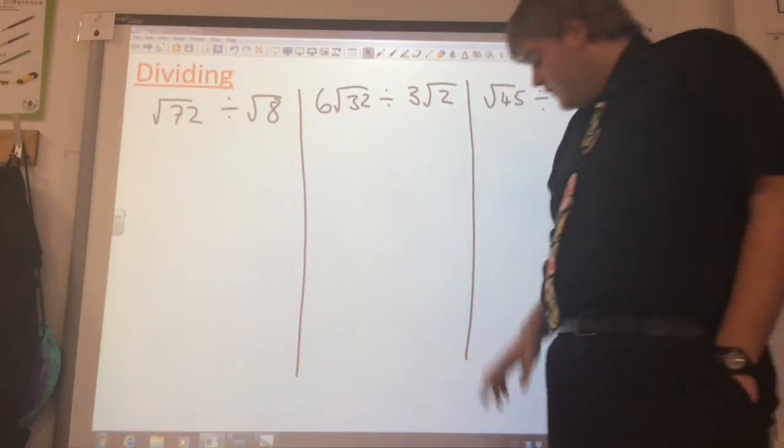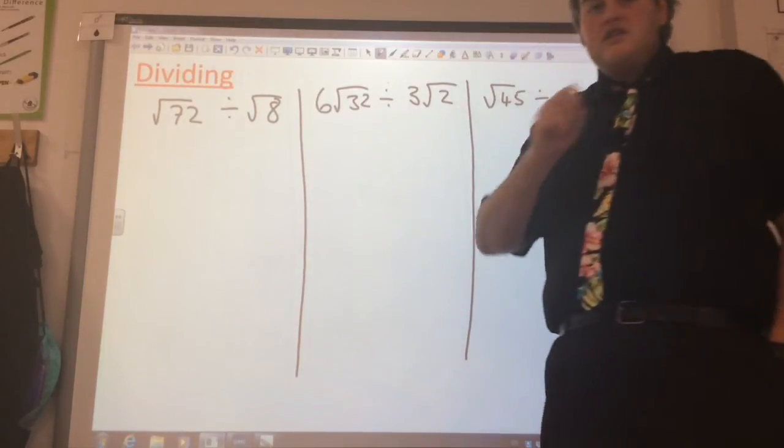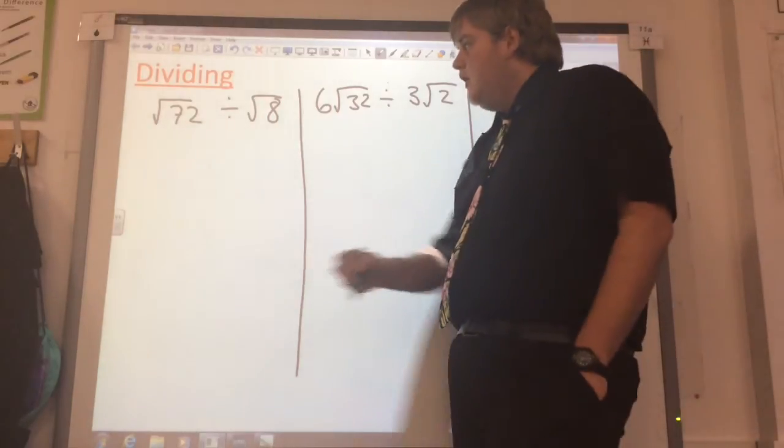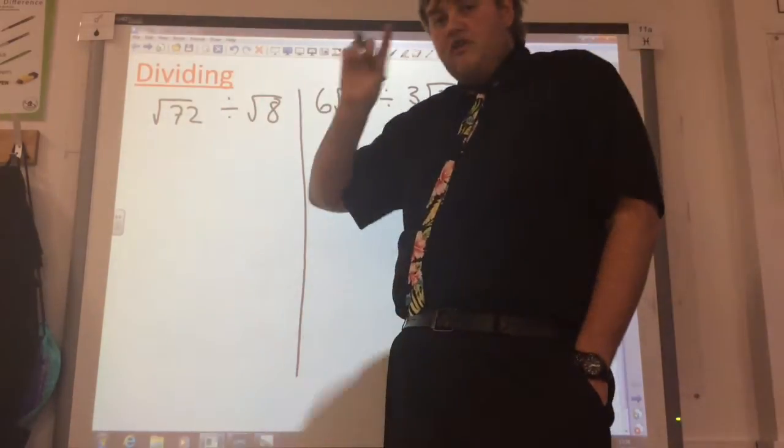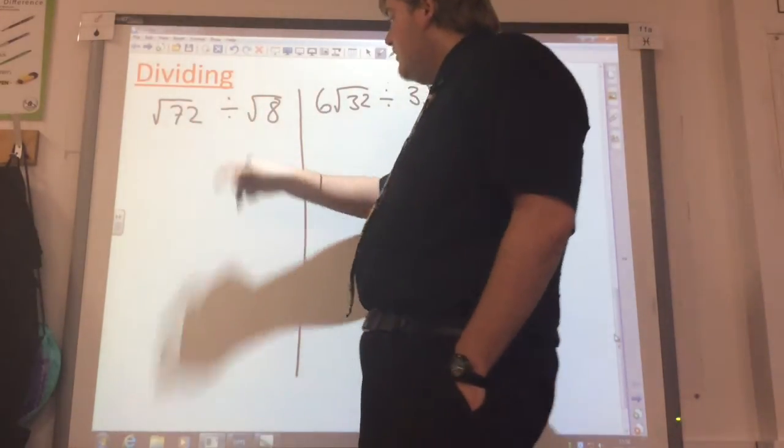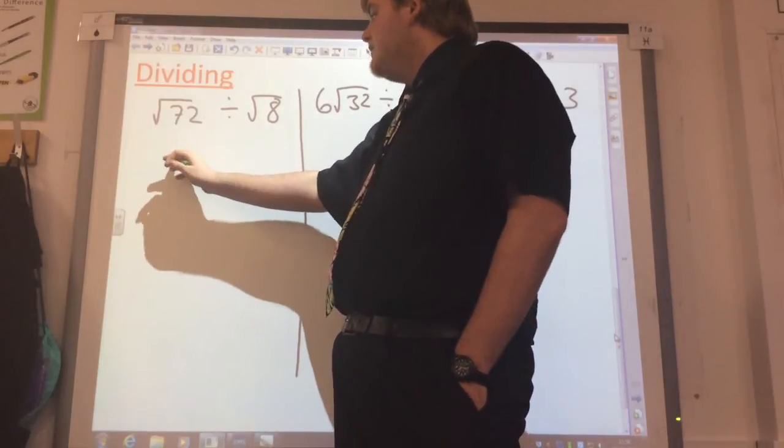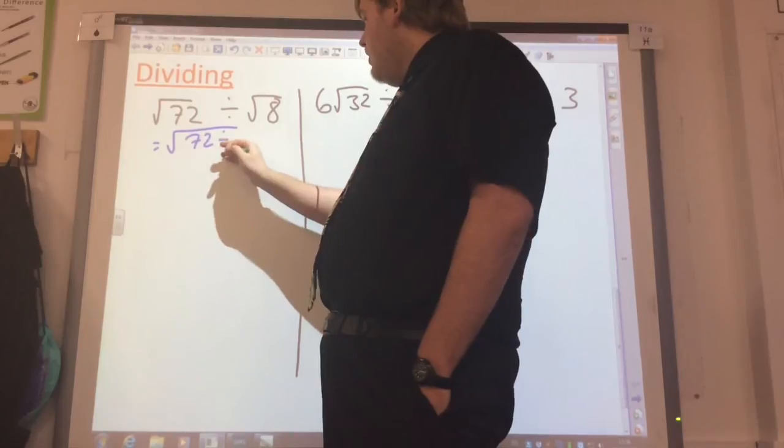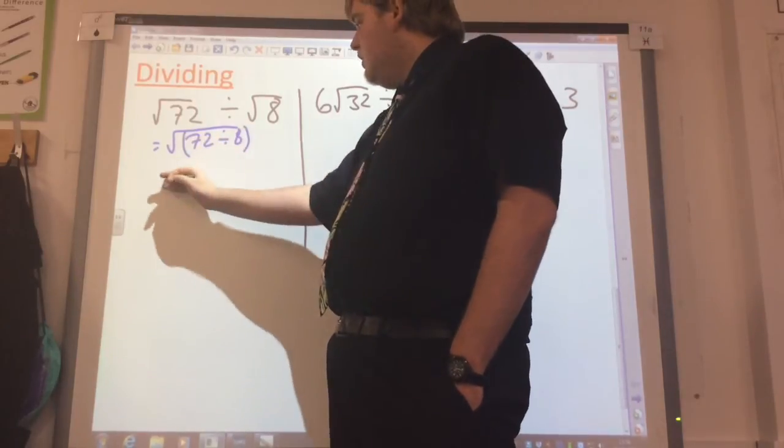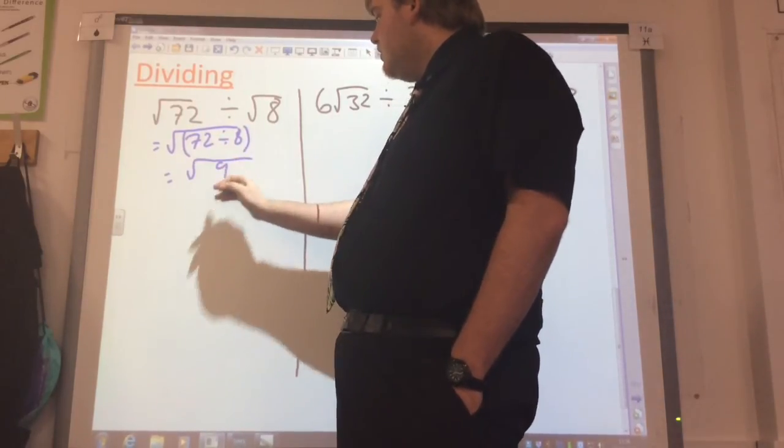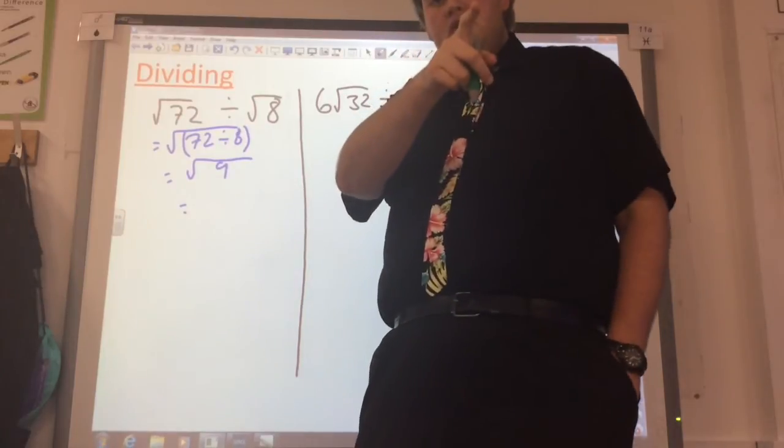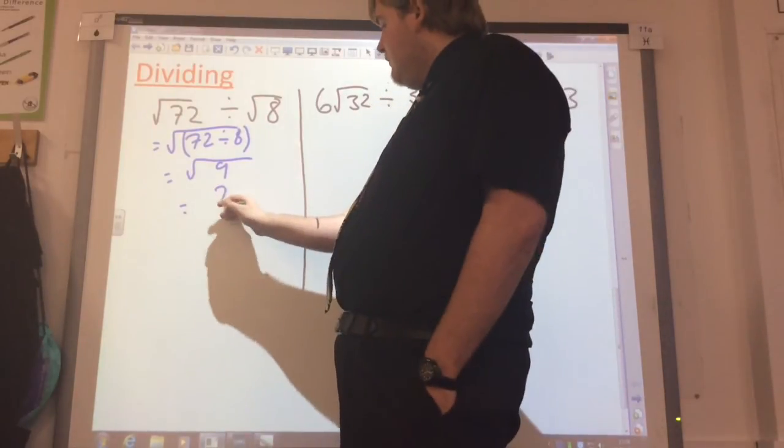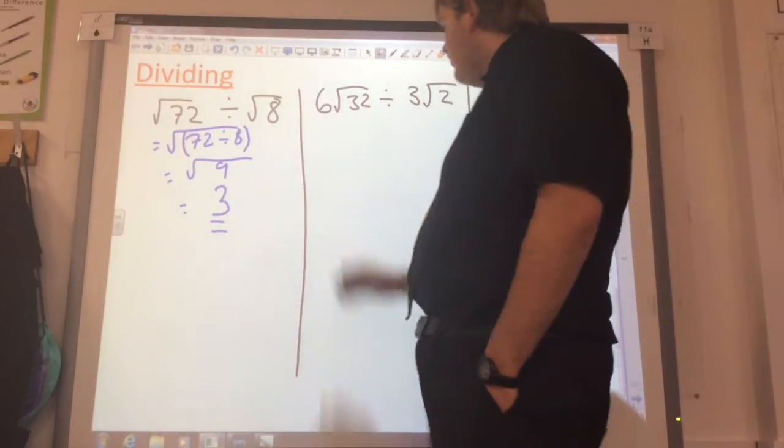Lastly, dividing. Dividing, what we need to do, same as multiplying, same principle. We take the two surds, we divide the numbers on the inside. So 72 divided by root 8, we take the root 72, we divide it by 8. 72 divided by 8 going to give us 9. The square root of 9 is correct, 3. Done, dusted, lovely jubbly.